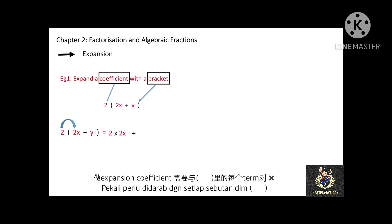In this case, the coefficient 2 is multiplied with the term 2x, plus the coefficient 2 multiplied with the term y. 2 times 2x equals 4x, and 2 times y equals 2y. The expansion equals 4x plus 2y.